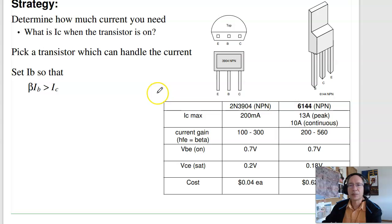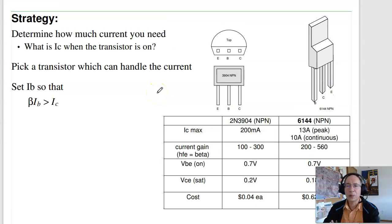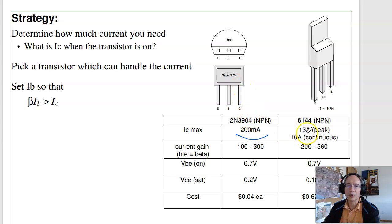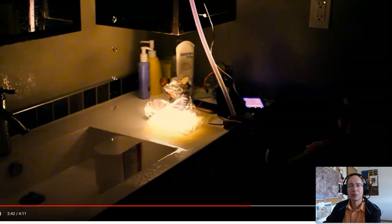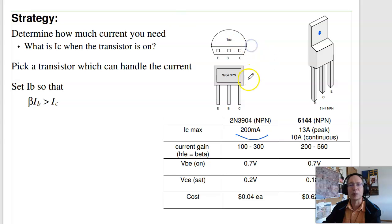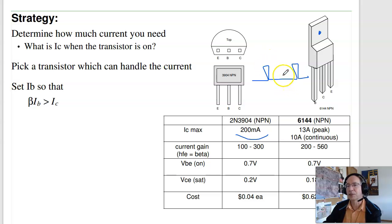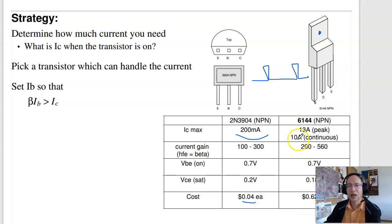When using a transistor as a switch, you need to pick one that can handle the current. If you need less than 200 milliamps, you can use the 3904 NPN transistor. If you need more than 200 milliamps, the 6144 can handle 13 amps peak and 10 amps continuous — that's used for strobe lights with very brief pulses, or for continuous loads like a DC motor. The advantage of the 3904 is it's dirt cheap: 4 cents each versus 62 cents each. But either one can be used as a switch.